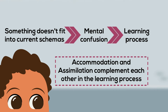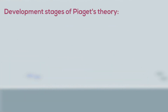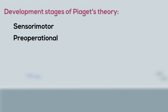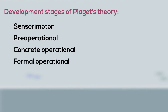Let us now take a look at the development stages of Piaget's theory. Piaget believed that children pass through four stages in the construct of knowledge. These are categorized as sensorimotor, pre-operational, concrete operational, and formal operational stages.